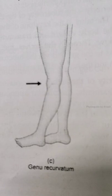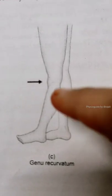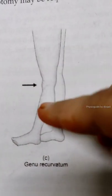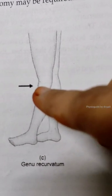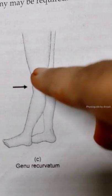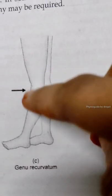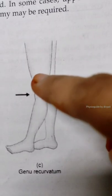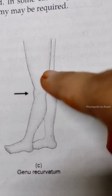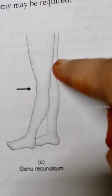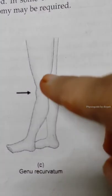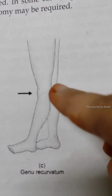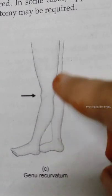Third one: genu recurvatum. This means hyperextension of the knee joint. This may be congenital — from birth — or acquired. Polio is the most common cause of genu recurvatum. Other causes include lax ligaments, any growth defect, or malunited fracture.